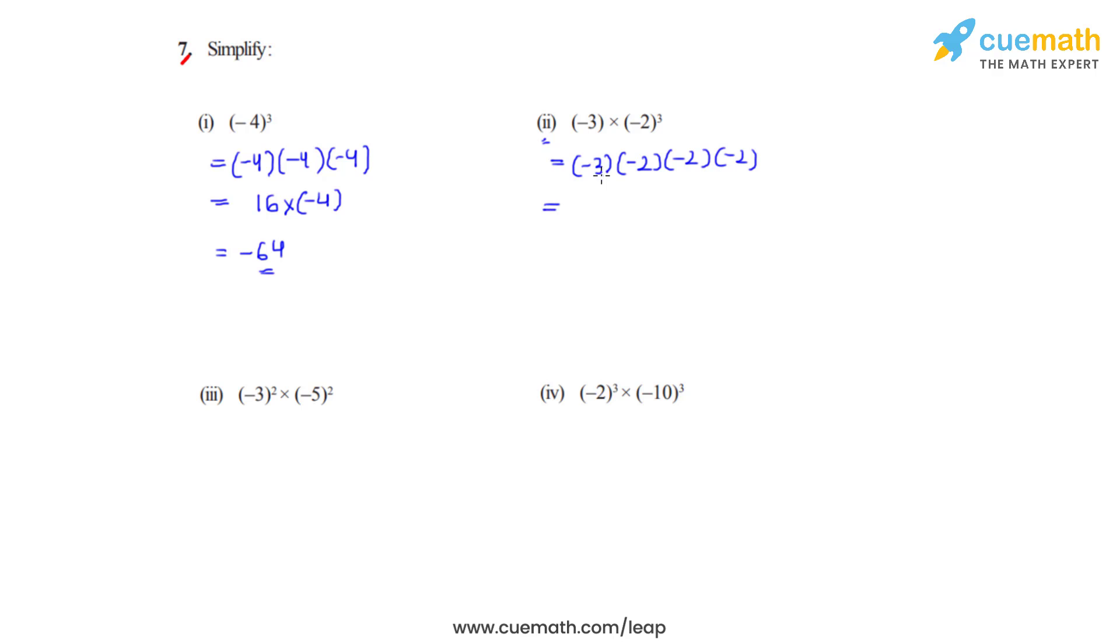So when we multiply negative 3 and negative 2 the product is positive 6, and when we multiply negative 2 and negative 2 the product is positive 4. So the answer becomes positive 24.